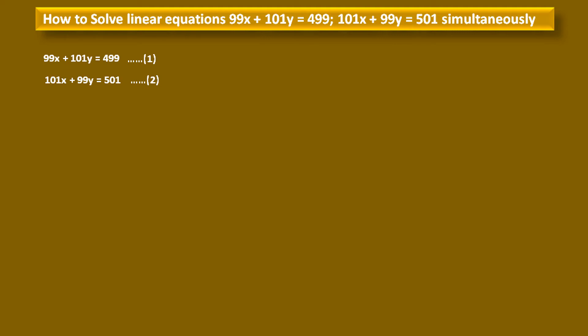Now, just observe what is given. The coefficients are equal but assigned to different variables. For example, in equation 1, 99 is the coefficient of x, and in equation 2, the same 99 is the coefficient of y. Similarly, in equation 1, 101 is the coefficient of y, and in equation 2, 101 is the coefficient of x. To solve this type of equation, we have to use a special technique.